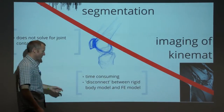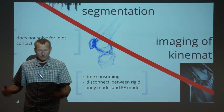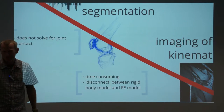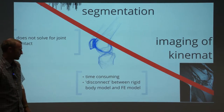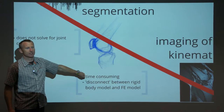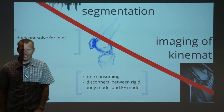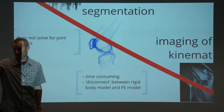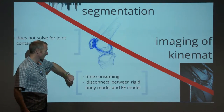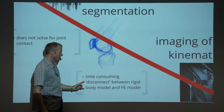Segmentation is always an issue — it's time-consuming. Typically the first six months of a PhD here involves segmenting the same bones from medical imaging data over and over again. There are smarter ways around that. There's also a disconnect between the two domains: the finite element model comes from segmented imaging data while the rigid body dynamic model uses simple linear scaling, so the geometry isn't even consistent between the two domains.